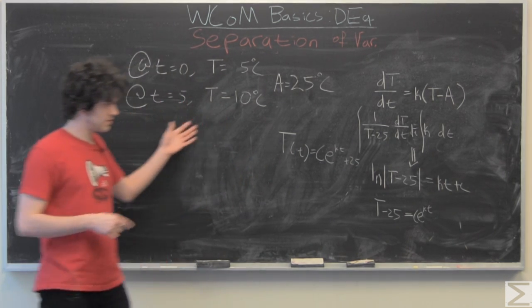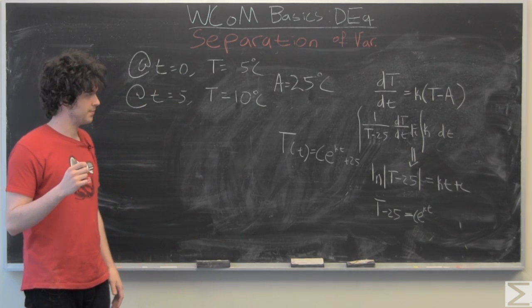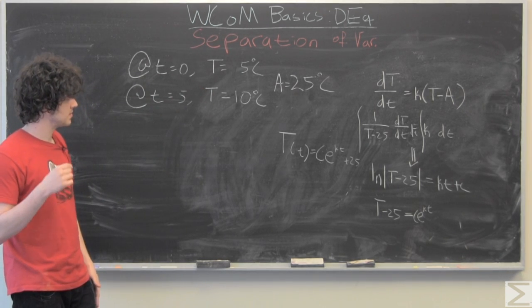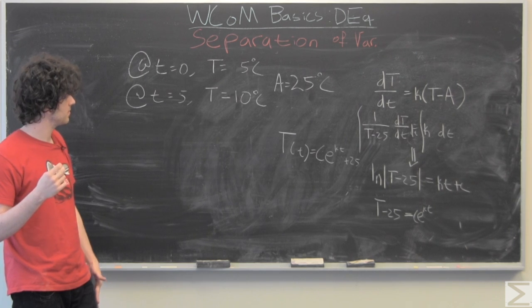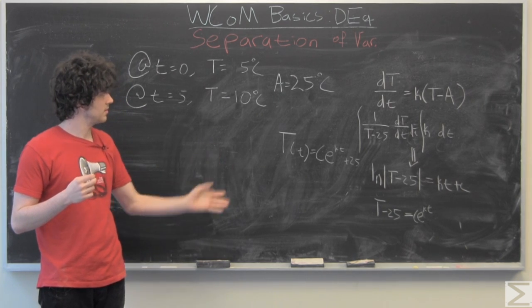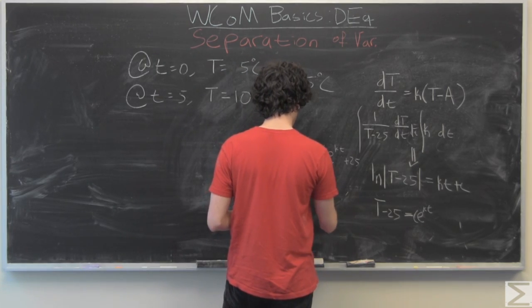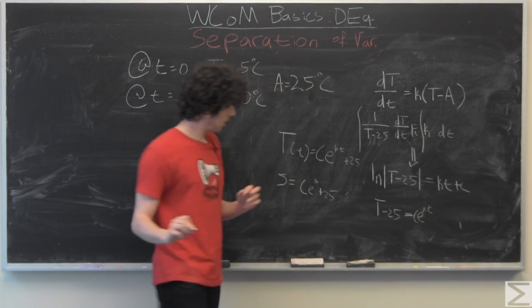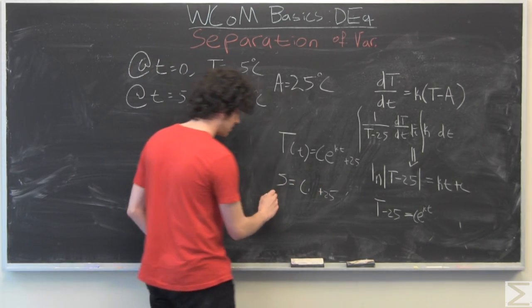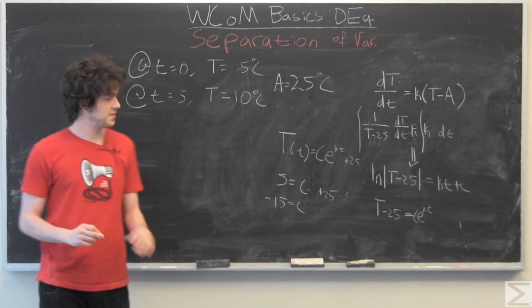But this is just a basic kind of plug and chug scenario where we're just going to put in our times, solve for our constants and move along. So what's nice is we have T equals zero and capital T equals five degrees Celsius.